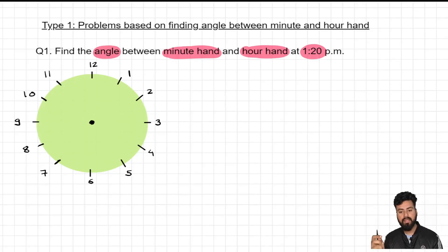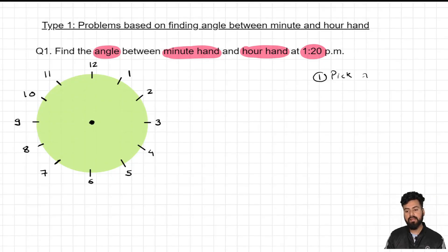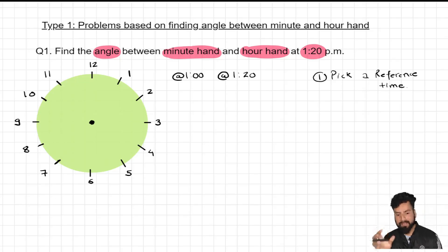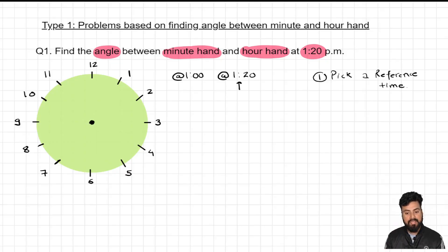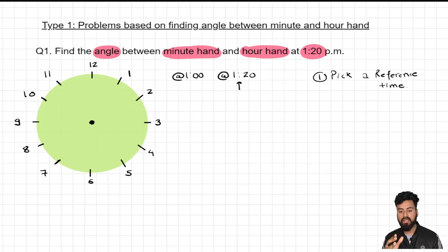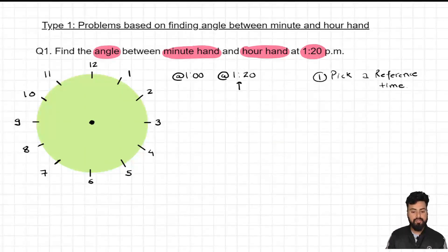Step one: pick a reference time. What time to pick? Since the time for which I want to find the angle is 1:20, pick a time for which you know the exact position of both minute hand and hour hand. Make sure your reference time is close to the given time. At 1 o'clock, the hour hand is pointing at 1 while the minute hand is pointing at 12.